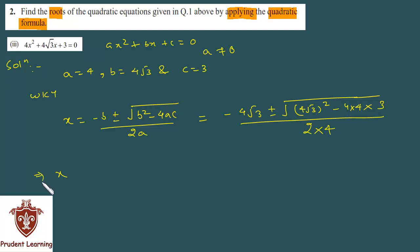Which implies x equal to minus 4 root 3 plus minus under root of 4 root 3 ka square. Jab aap karenge 4 ka square 16, root 3 ka square 3, 16 into 3 is 48. Minus 4 into 4 is 16 and 16 into 3 is 48. Phir se 48 aaya over 4 into 8 which gives minus 4 root 3 upon 8 plus minus 0. Actually, poora whole upon hai, thik hai, yeh toh zero ho gaya.